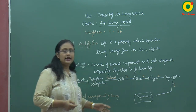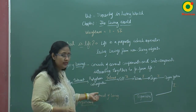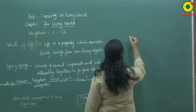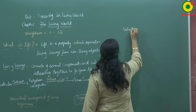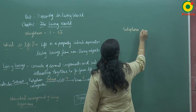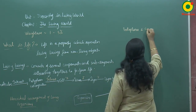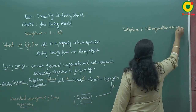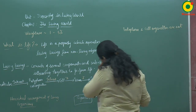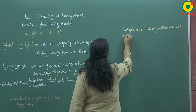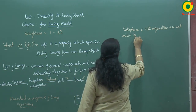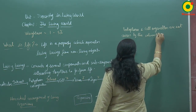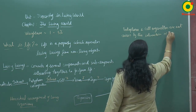In this way, this is the hierarchical arrangement of the living organism. Protoplasm and cell organelles arise by the interaction of biomolecules.